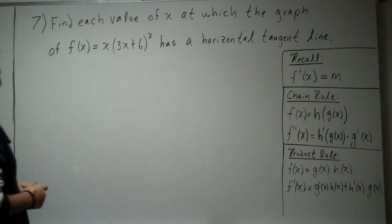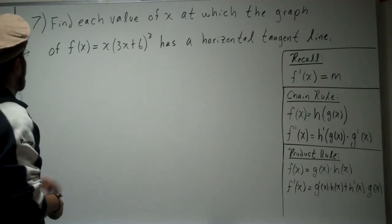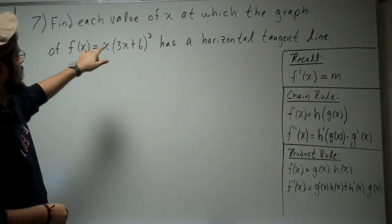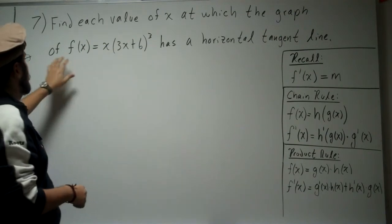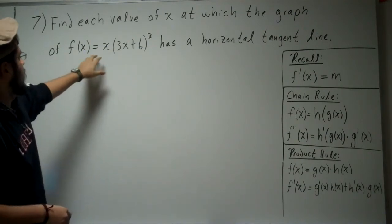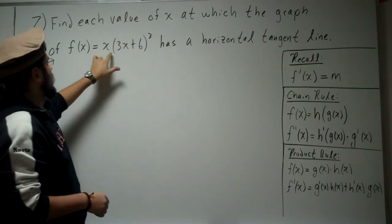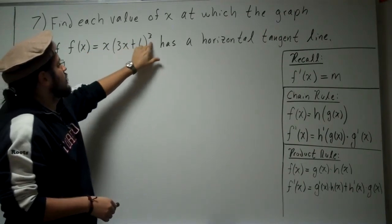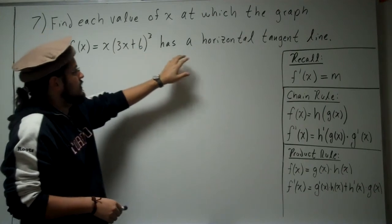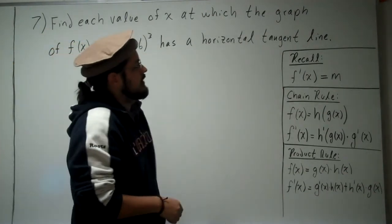We're going to go ahead and do problem 7. Problem 7 says: find each value of x at which the graph of f(x) = x times (3x + 6), all cubed, has a horizontal tangent line.